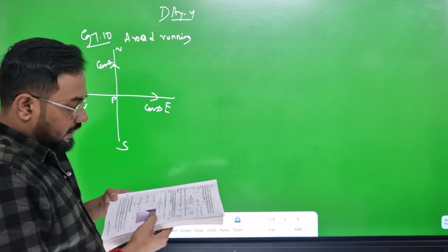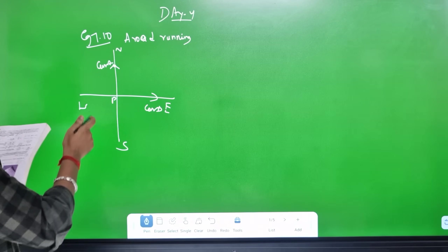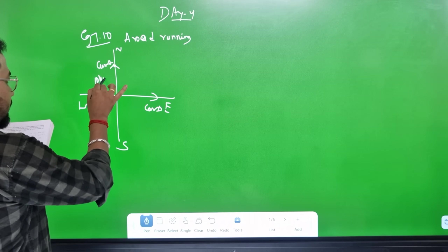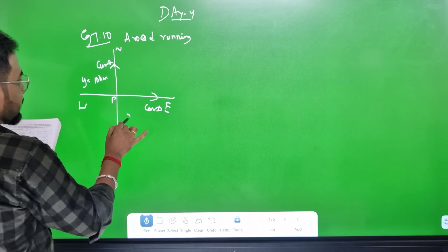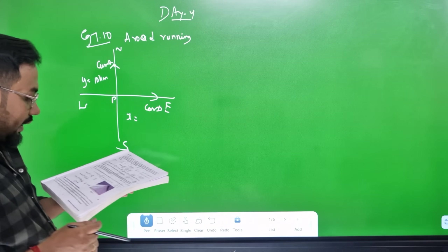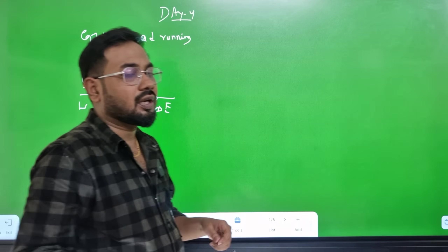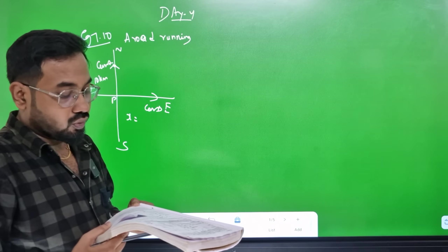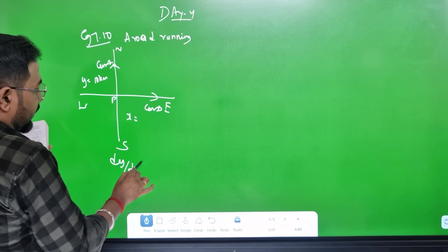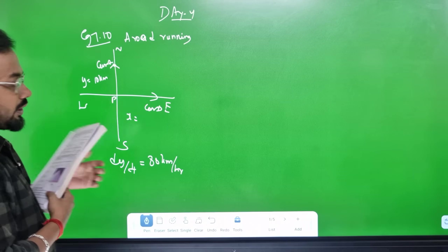At a particular time, car A is 10 km to the north of point P — that is y. Car A's speed, looking at dy/dt, is 80 km per hour.